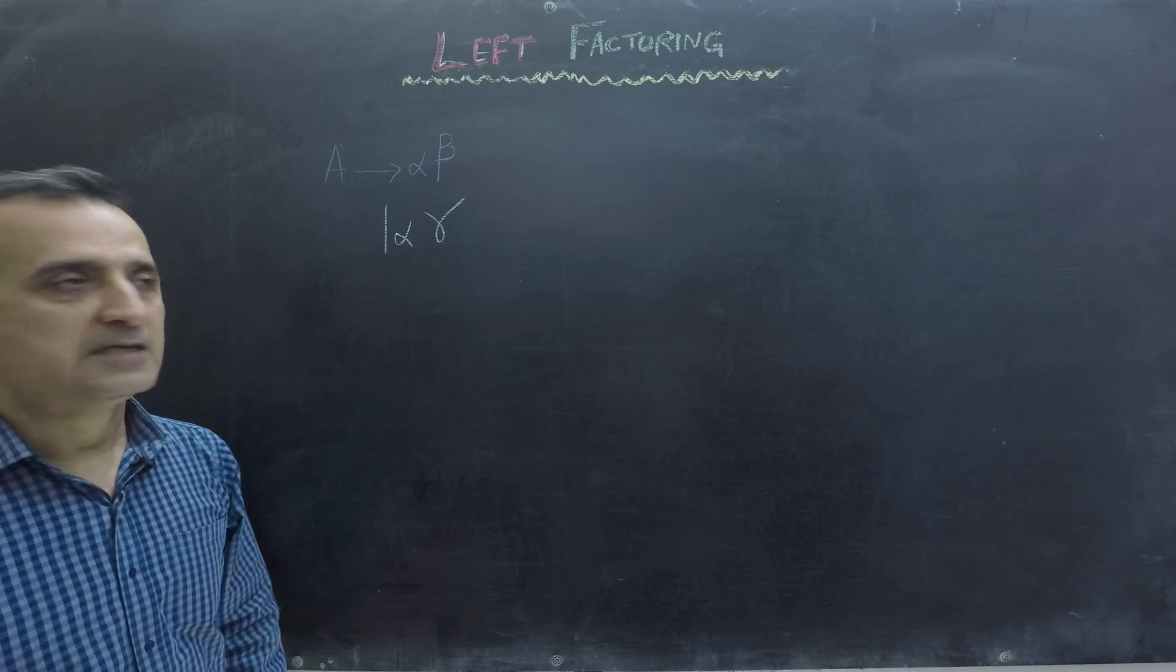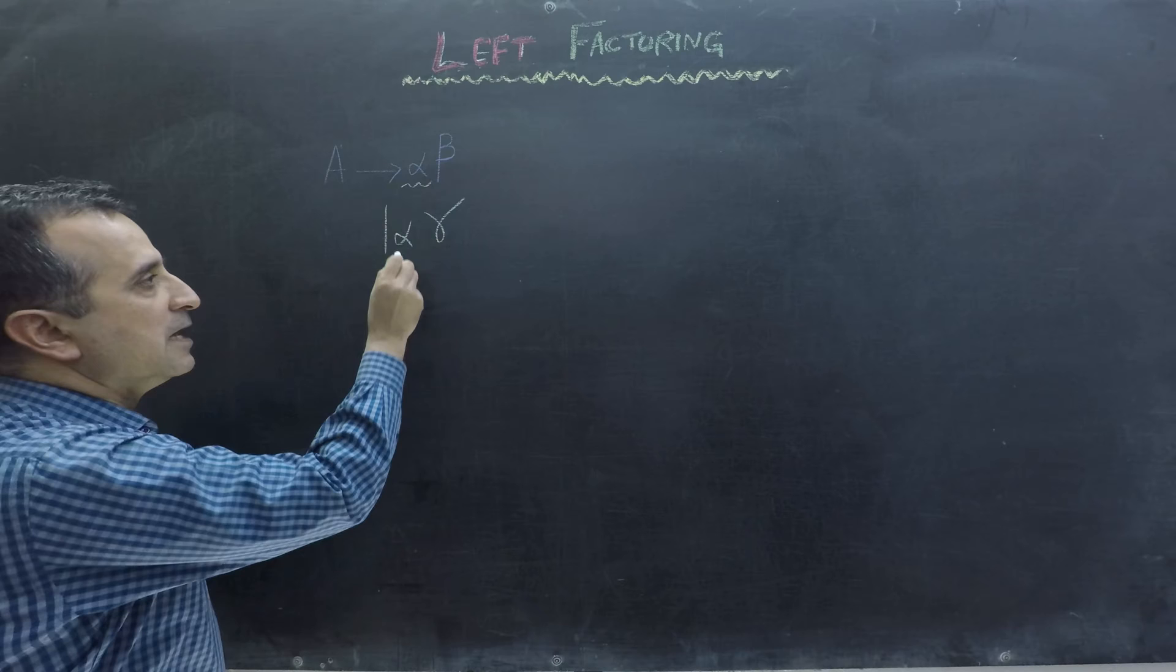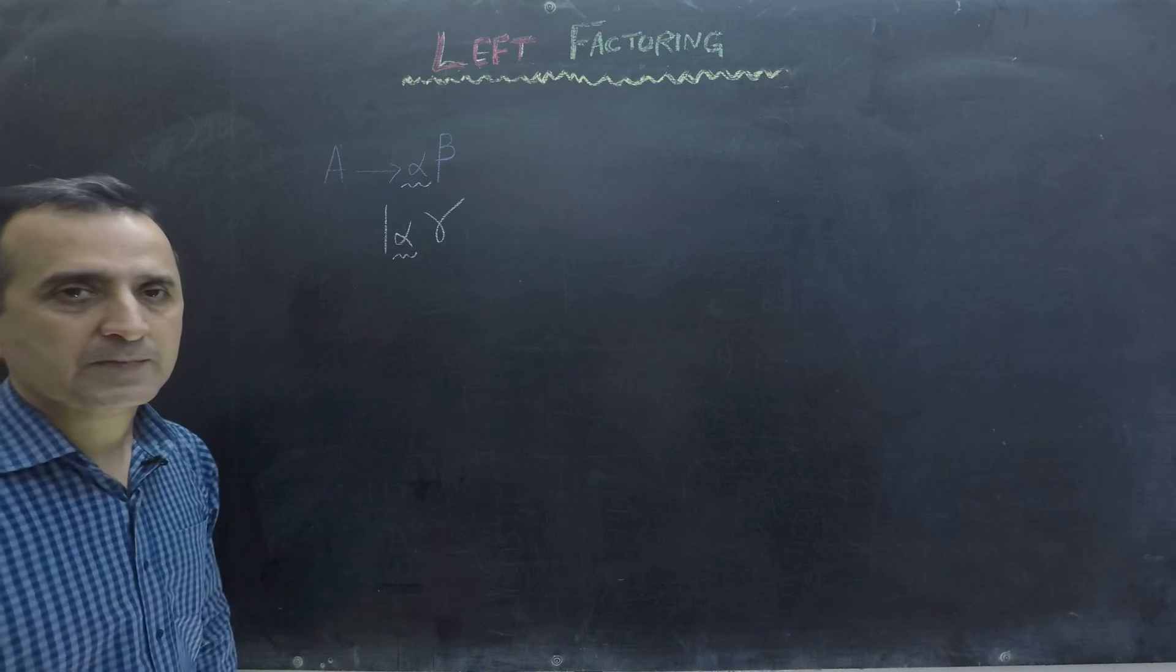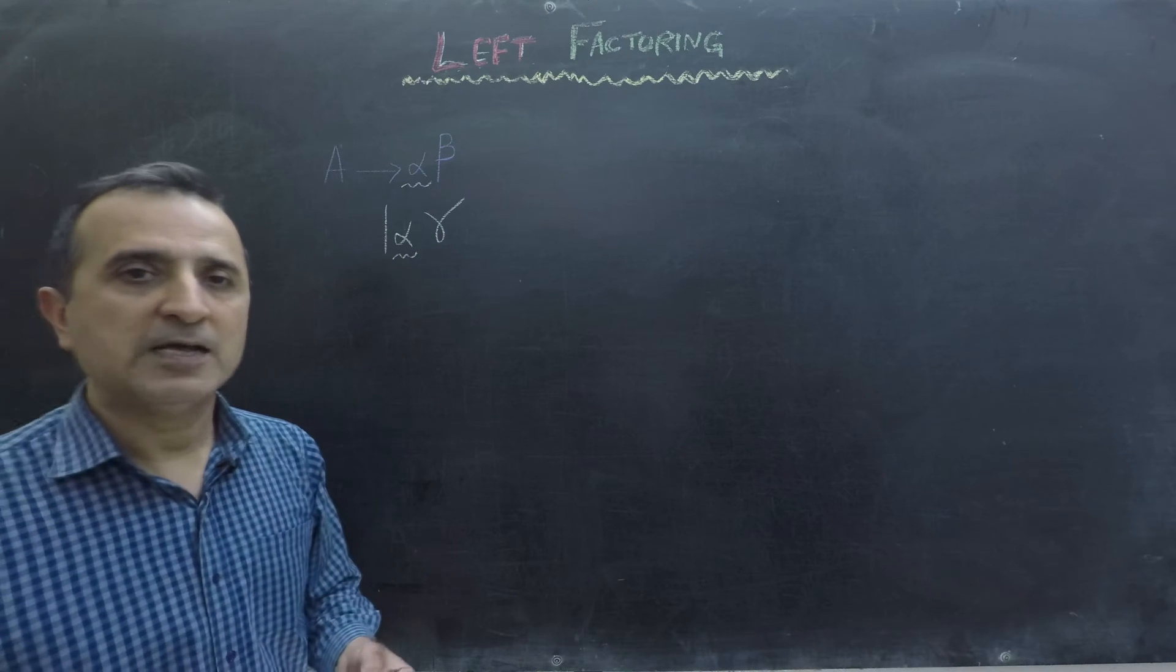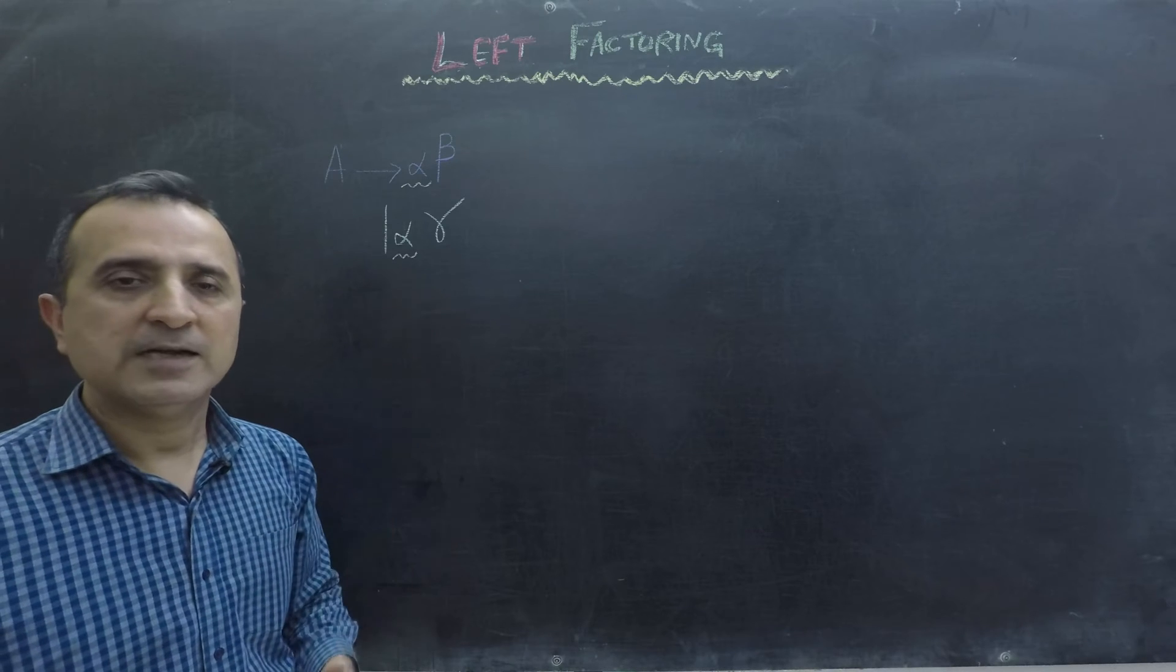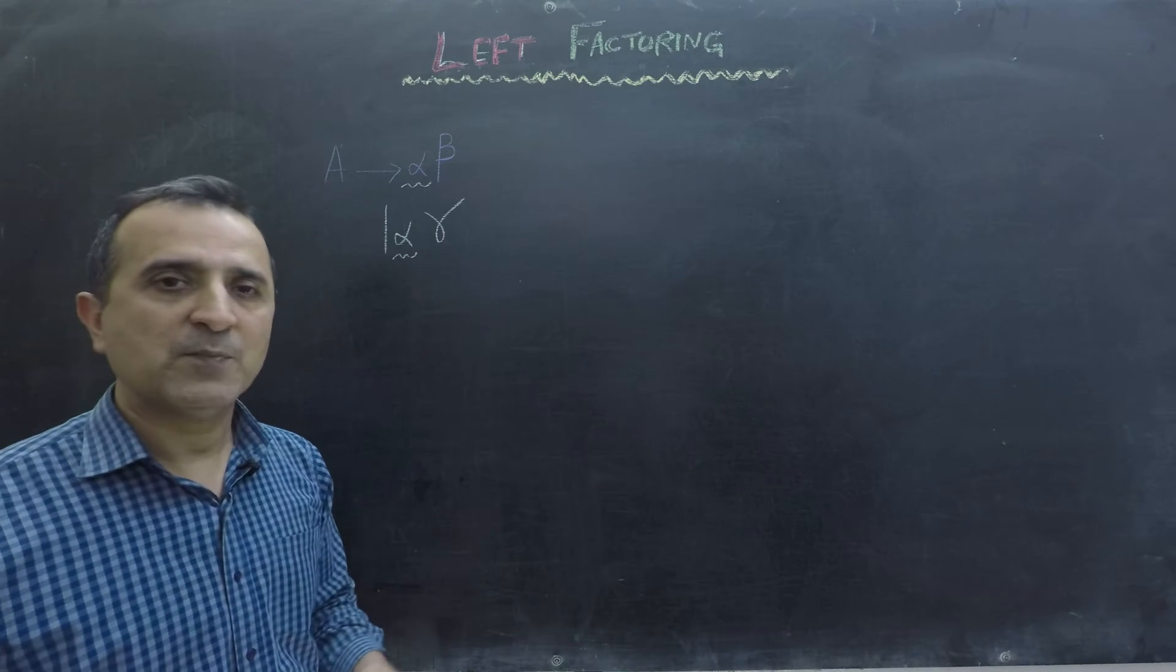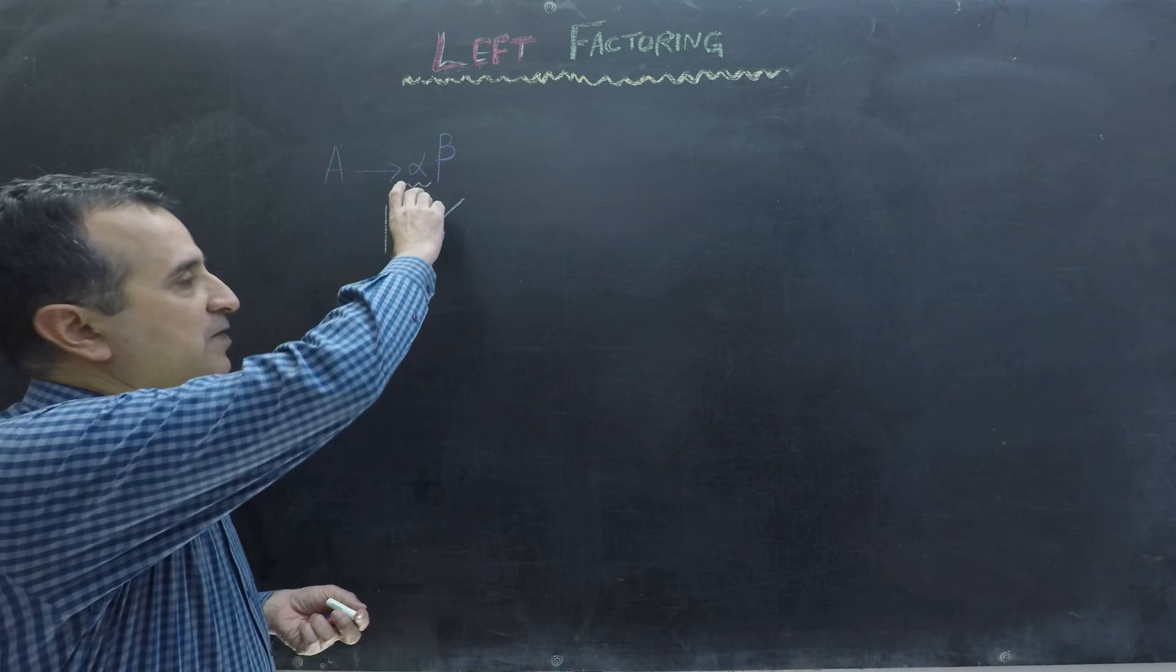A compiler has to create a parse tree using this context-free grammar and some input string. While creating a parse tree, if we have a partial match till alpha, then there are two different possibilities: either goes to beta or go to gamma.